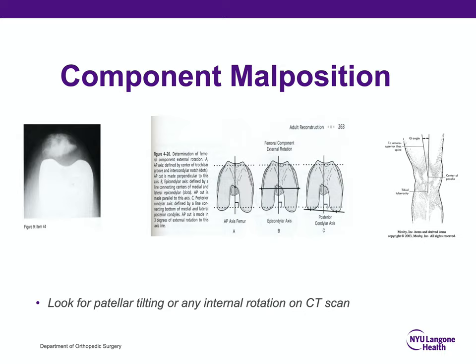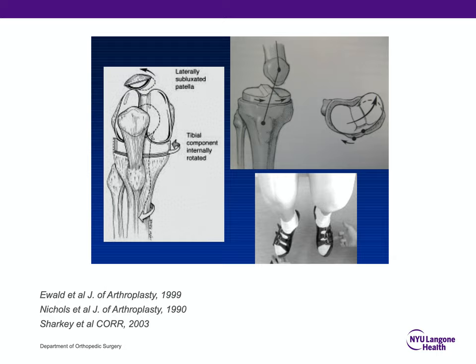Component malposition is something frequently evaluated and tested. They're not likely to tell you that a component is malpositioned, but you may see a CT scan report showing internal rotation or an x-ray with significant patellar tilting. If you see patellar tilting, consider malrotation, but neofusion can cause this as well. On physical exam, internal rotation of the tibia can cause excessive rotation of the foot and ankle, which may be another clue that you are dealing with a malrotation issue.